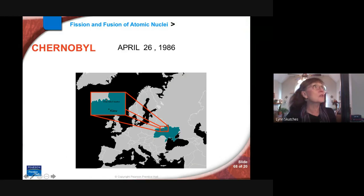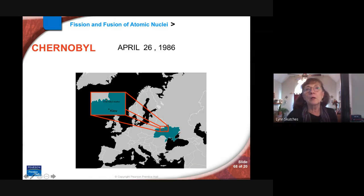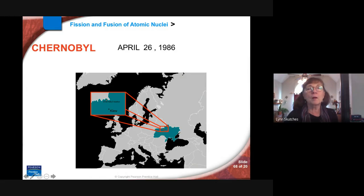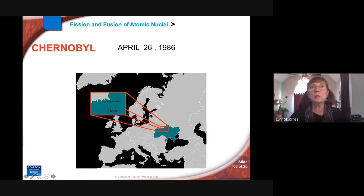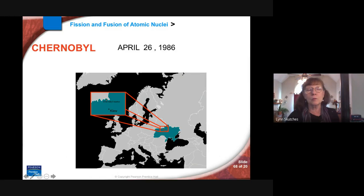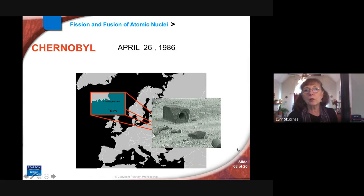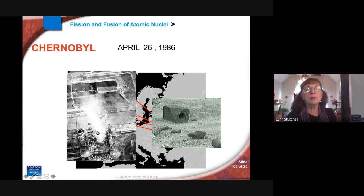Chernobyl was a terrible disaster. In April 1986, a nuclear power plant north of Kyiv blew up. They were running a test, and much like the Radium Girls, workers were assured it was super safe. They had valves tied off with ropes, pulled out all the control rods when they shouldn't have — terrible human errors that caused it to overheat so quickly it exploded. Tons — literally tons — of nuclear material were blasted into the atmosphere.